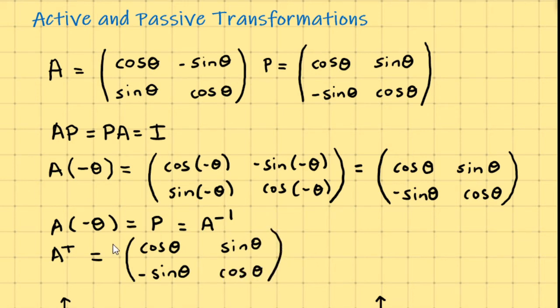So if you look at this transpose A, it's the same as P. So if the transpose of A is the same as P, but P is the same as the A inverse, that means that A transpose is the same as A inverse.